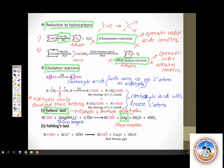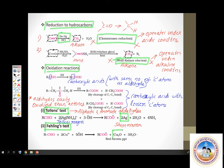Fehling's test is also a mild oxidizing agent test. It also converts the aldehyde to its oxidized form, but the cupric ion in Fehling's solution gets reduced to a reddish precipitate of cuprous oxide (Cu2O). The speciality of Fehling's test is that it is shown only by aliphatic aldehydes, not by aromatic aldehydes.